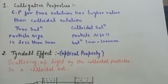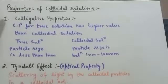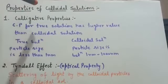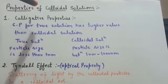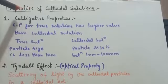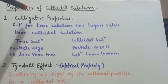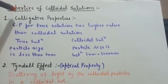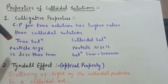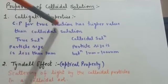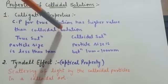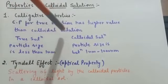Next are the properties of colloidal solution. The first property is colligative property. Colligative properties for a true solution have higher values than for a colloidal solution. True solutions have particle sizes less than 1 nm, while colloidal solutions have particle sizes between 1 nm and 1000 nm.